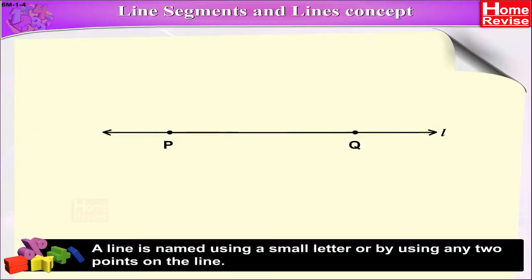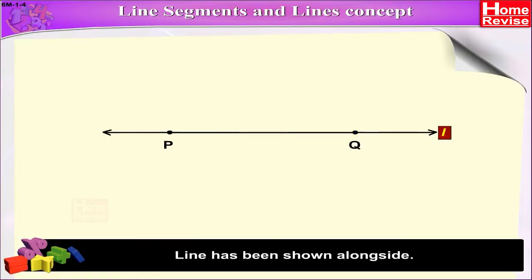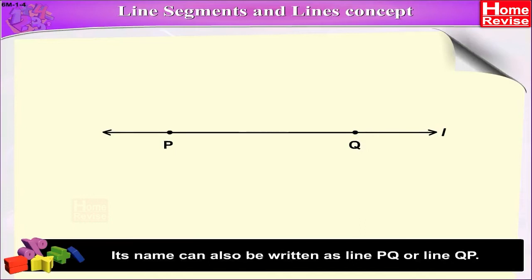A line is named using a small letter or by using any two points on the line. A line has been shown alongside. Its name can also be written as line PQ or line QP.